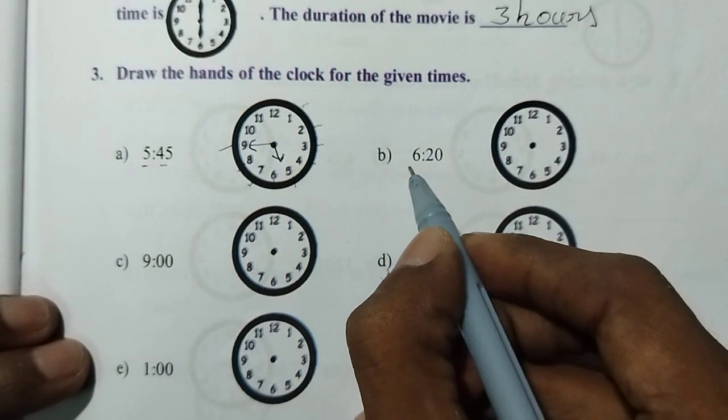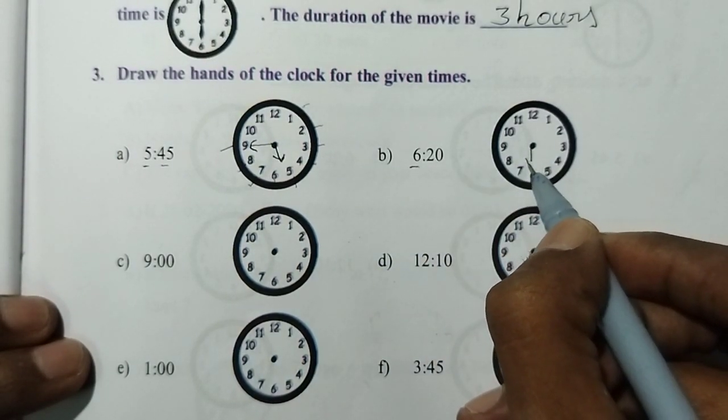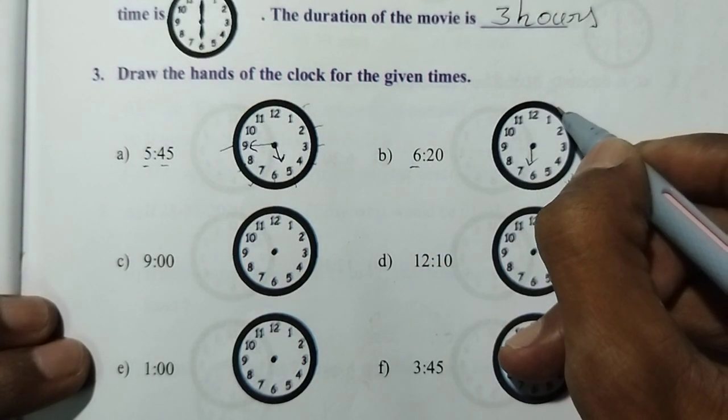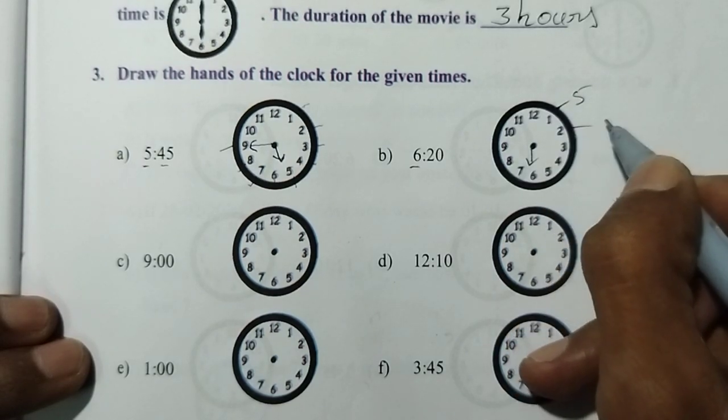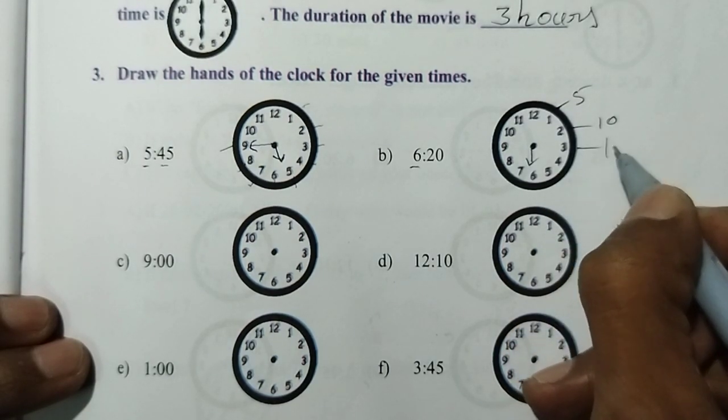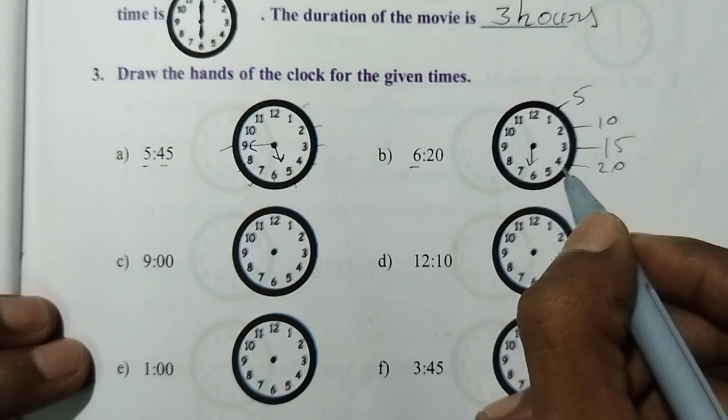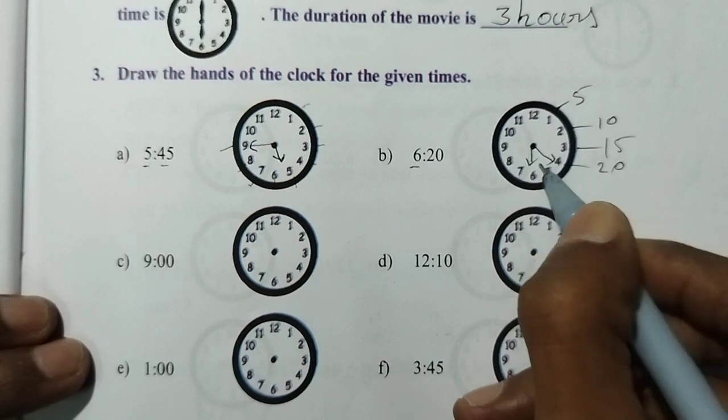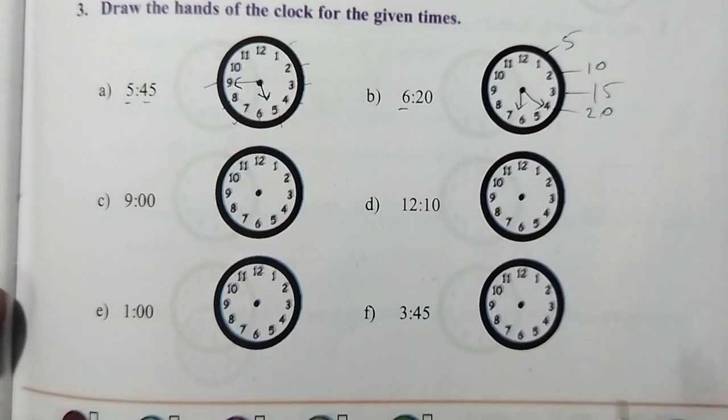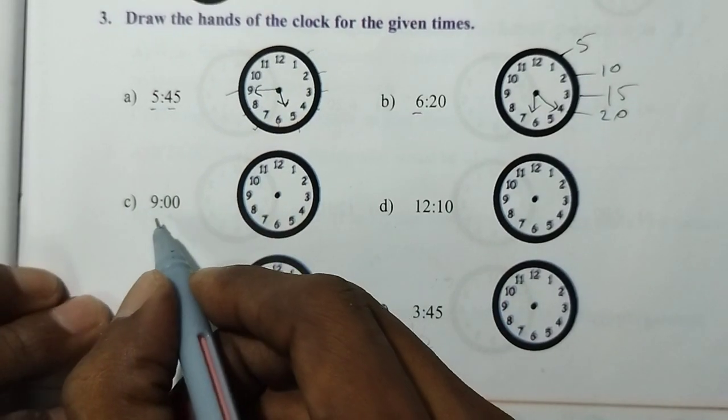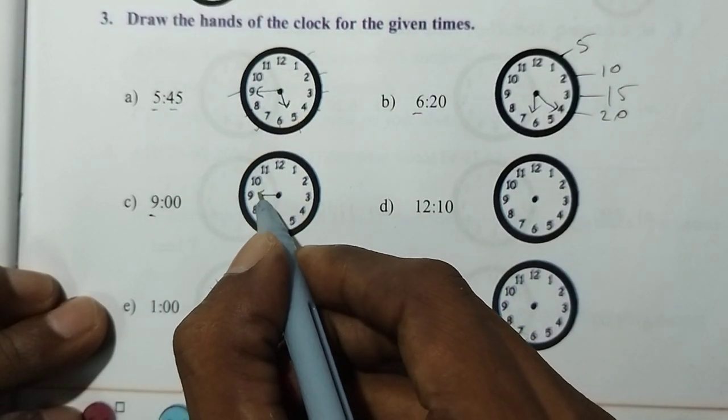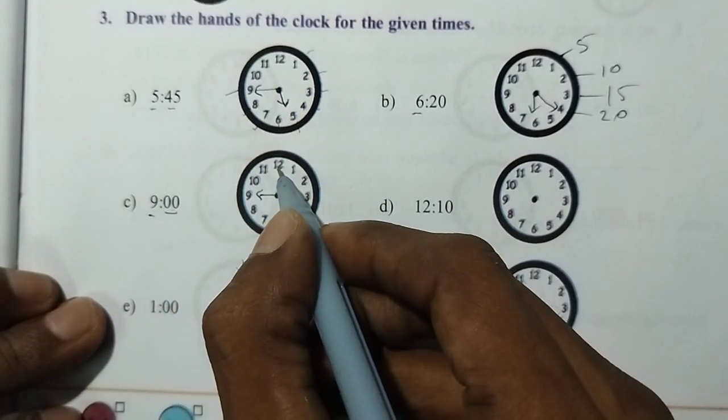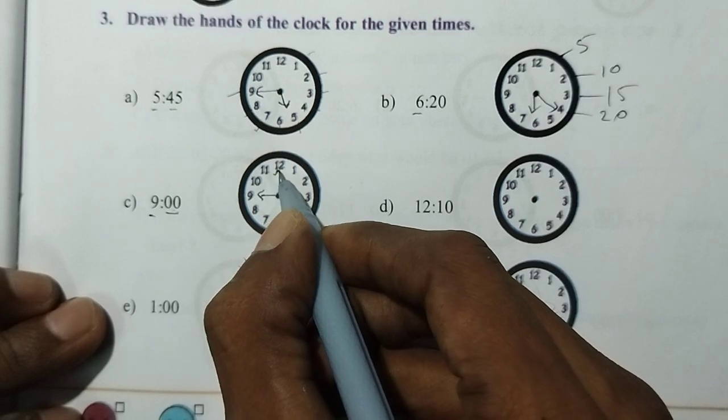For 6:20, the small hand is at 6. For 20 minutes, let's count: 5, 10, 15, 20. That's 4 on the clock. So the big hand is at 4. For 9:00, the small hand is at 9. There are zero minutes, so the big hand is at 12.